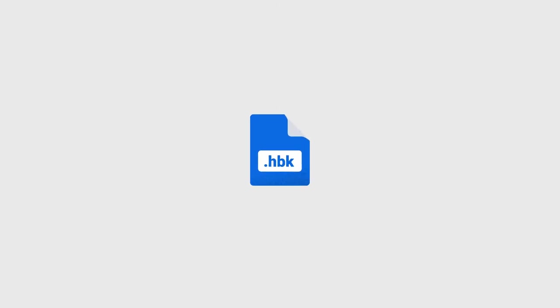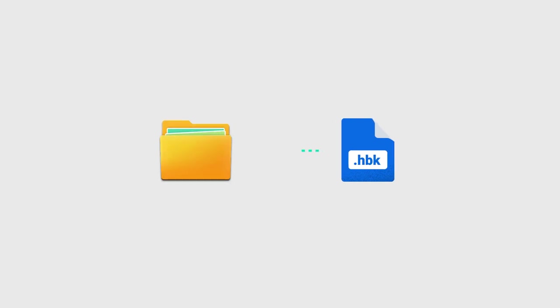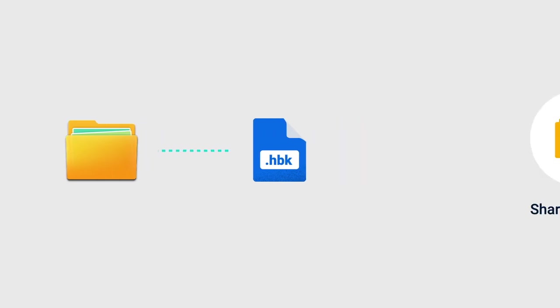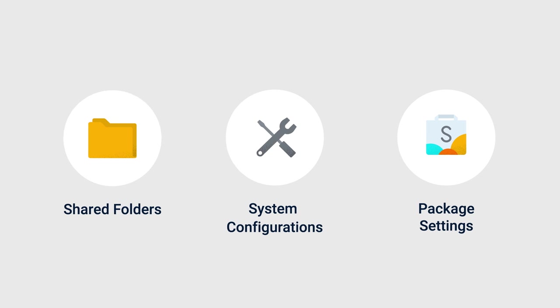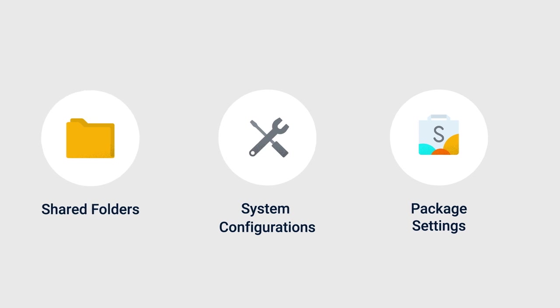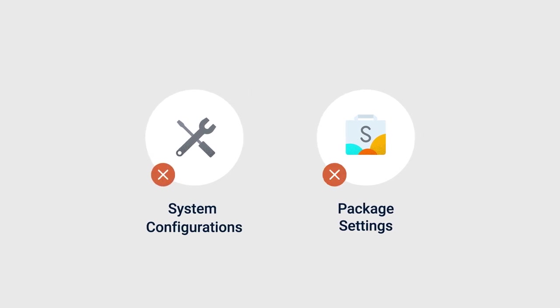The .hbk backup file is a type of packaged file that Hyper Backup uses to save all your backup data. File Station also allows you to browse and restore individual files and folders via the .hbk backup file. With this method, you will not be able to restore system configurations or package settings.